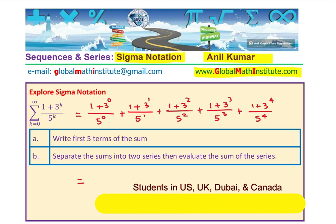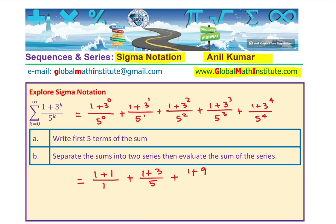So we get this as, 1 plus anything to the power of 0 is 1, so we get 1 plus 1 over 1, plus 1 plus 3 over 5, plus 1 plus 9 over 25, plus 1 plus 27 over 125, plus 1 plus 81 over multiplying 125 by 5 is 625, 25 square, that is.